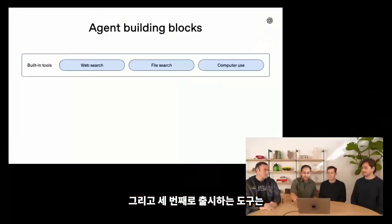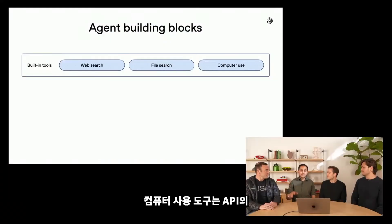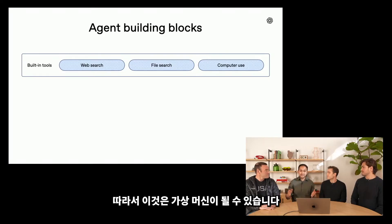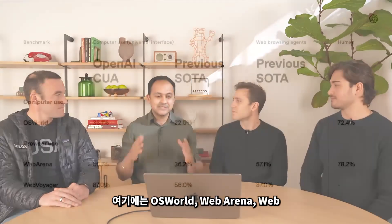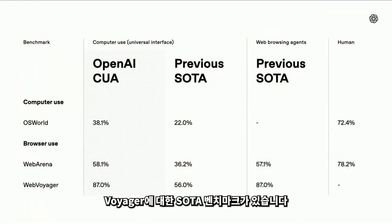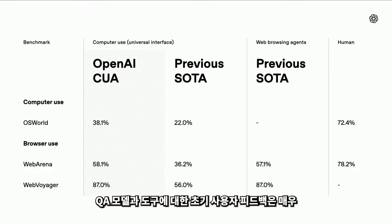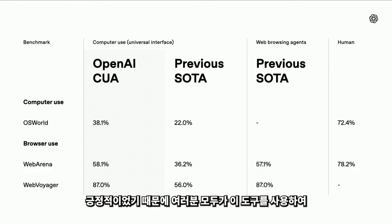So you have web search for public data, file search for the private data that you have, and the third tool we're launching is the computer use tool. The computer use tool is Operator in the API, but it allows you to control the computers that you are operating — a virtual machine or a legacy application that just has a graphical user interface with no API access. If you want to automate those kinds of tasks, you can use the computer use tool, which comes with the computer use model — the same model used by Operator in ChatGPT. It has SOTA benchmarks on OS World, Web Arena, and Web Voyager, and early user feedback has been super positive.